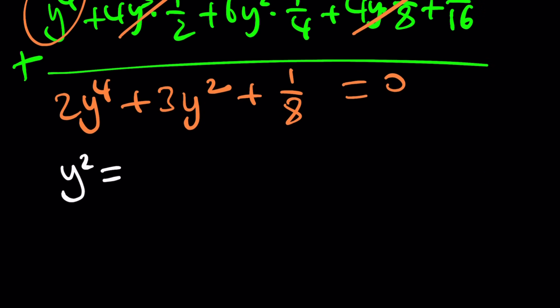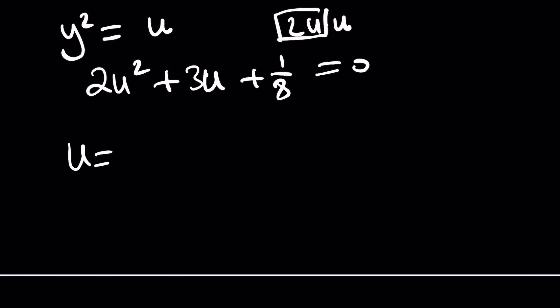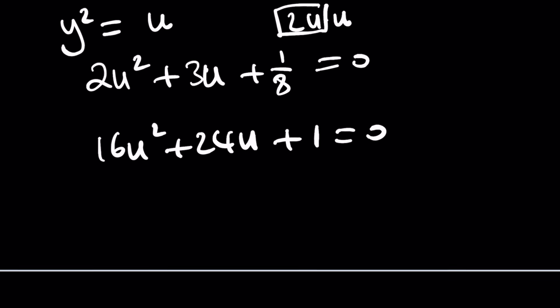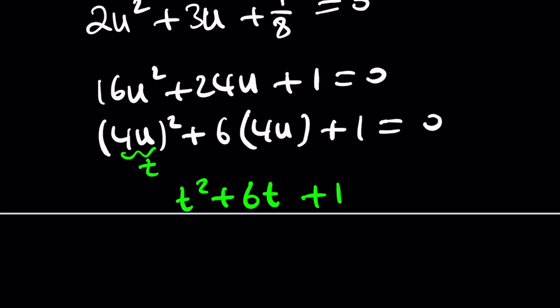So you can go ahead and set y squared equal to u. That'll give you two u squared plus three u plus one eighth equals zero. If you don't like fractions, go ahead and multiply by eight. Sixteen u squared plus 24 u plus one equals zero. You can just write this as four u squared plus six times four u. All these are four u. And now you can call this t. T squared plus six t plus one equals zero. A lot of substitution. I love it.